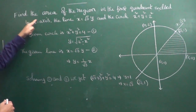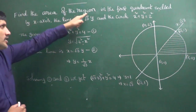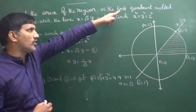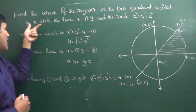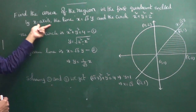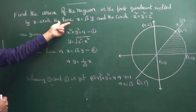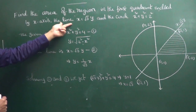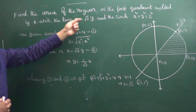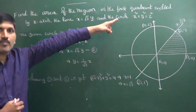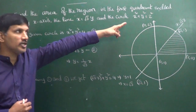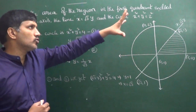The first question: Find the area of the region in the first quadrant enclosed by the x-axis, the line x = √3·y, and the circle x² + y² = 2² (i.e., x² + y² = 4).